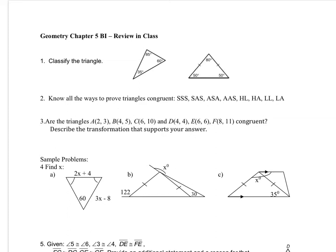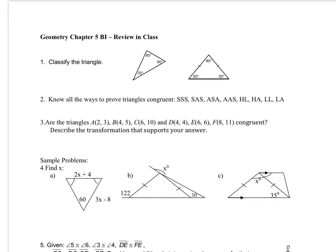Today we're going to be working on the Chapter 5 in-class review. For these first problems, we have to classify the triangle. In this first triangle, none of the angles are the same. So we classify by the angle and then by the sides. Since none of the angles are the same, the sides won't be the same — this is going to be scalene. And since every angle is less than 90 degrees, this will be acute.